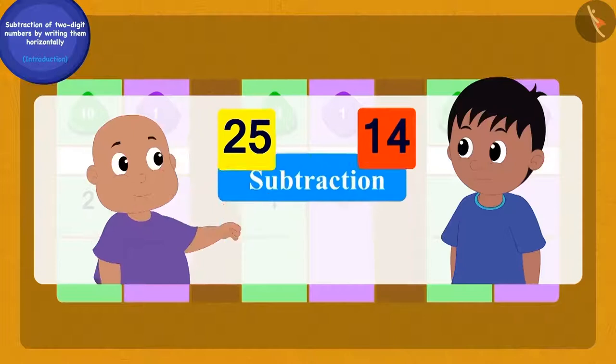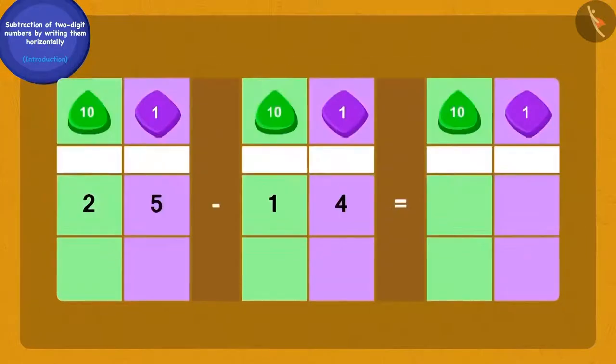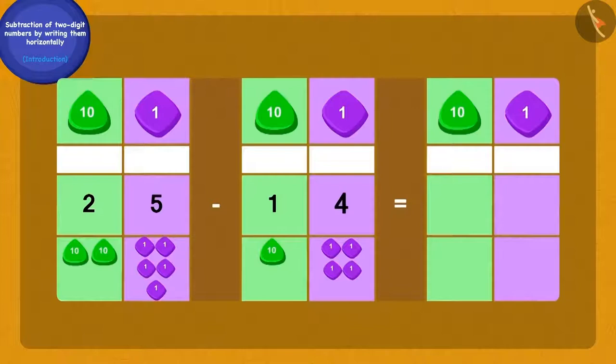Now, I will write 25 and 14 as tens and ones in this way. If I subtract the 4 ones of 14 from the 5 ones of 25, how many ones are we left with?